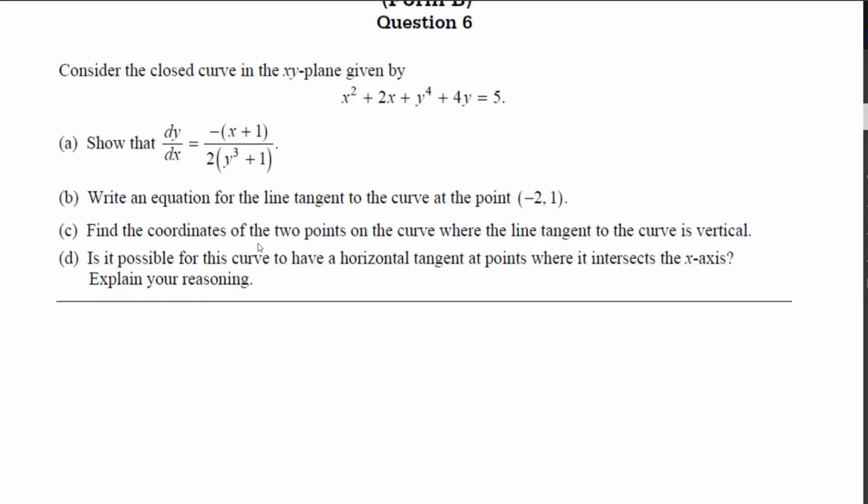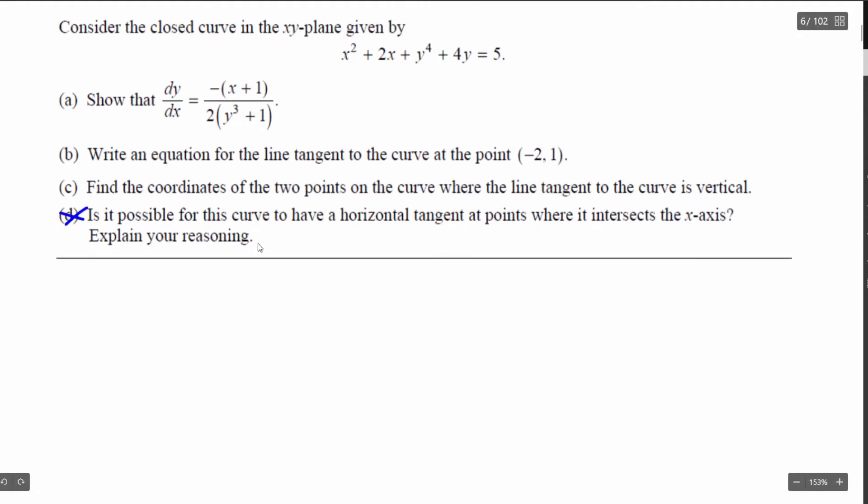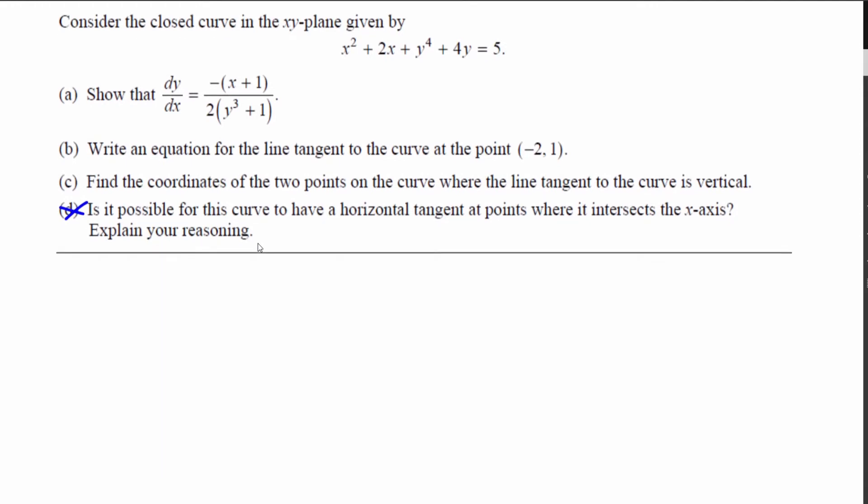We have this closed curve given to us: x squared plus 2x plus y to the fourth plus 4y equals 5. Again, the equation of some sort of circle. I do want to point out that we're not going to be looking at part d in this example, but we're going to be showing that dy/dx does come out to be that and that's going to be the exact same pattern that we've been doing.